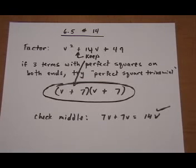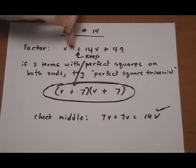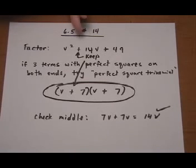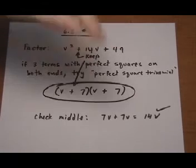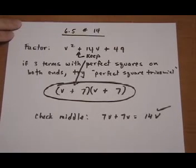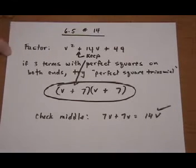So this is how you can know that you want to use the perfect square trinomial factoring. And usually I just look and see if I have perfect squares on the ends. I try it and see if it works. If it doesn't work, I go to the normal trinomial factoring. Let's try one more.